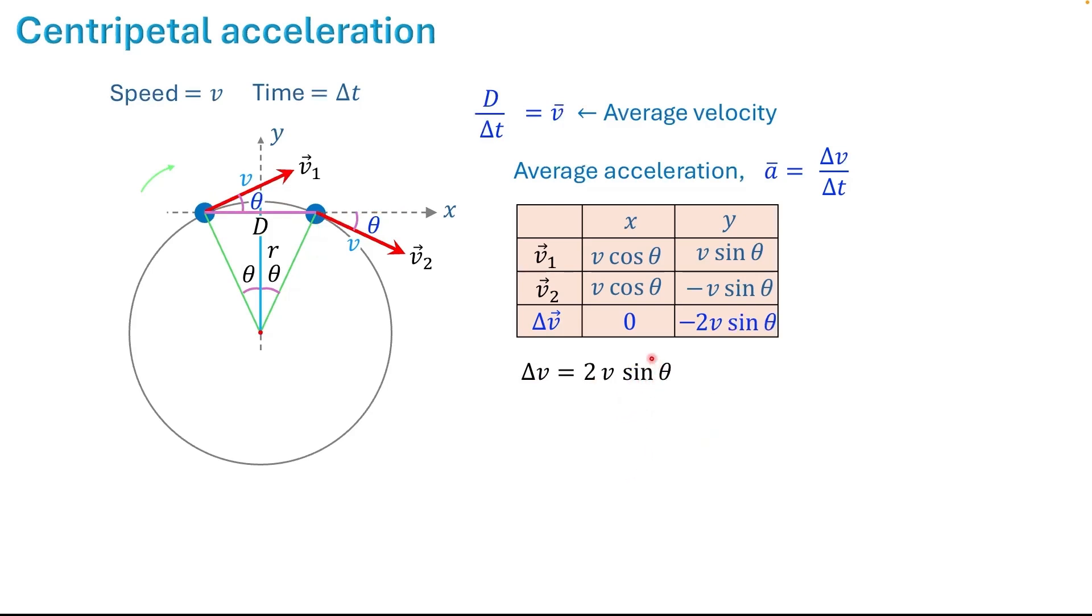Next, from the figure, find sine theta. Take this right triangle. From here to here it is d, so the length of this side is half of d. So sine theta is equal to d over 2 divided by r, which equals d over 2r.